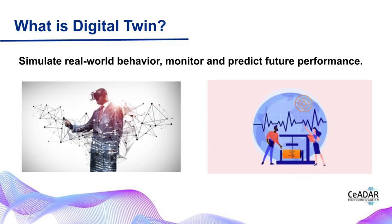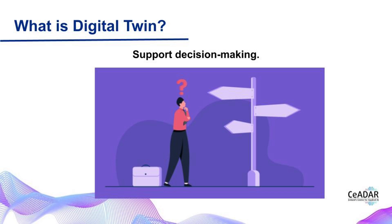So why do we care about this? Well, by creating a digital twin, we can monitor the performance of the physical object in real-time and predict any potential issues or future performance. This information can then be used to support decision-making and even simulate the process to understand the effects of different decisions. In short, the digital twin helps us understand the past, present and even predict the future.